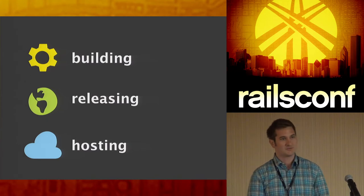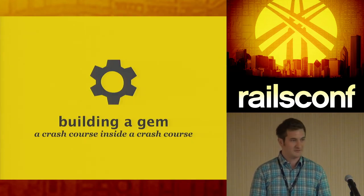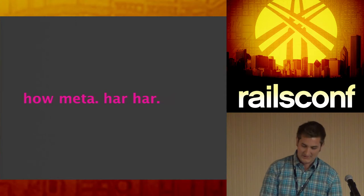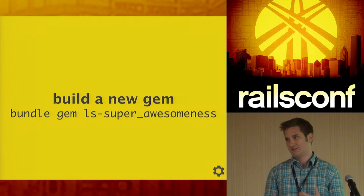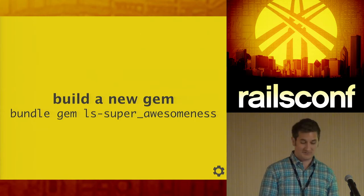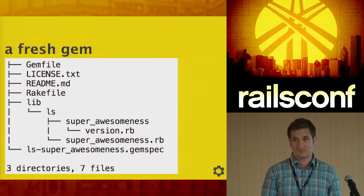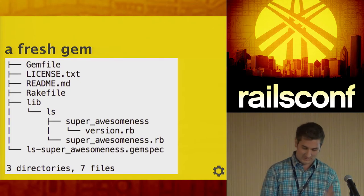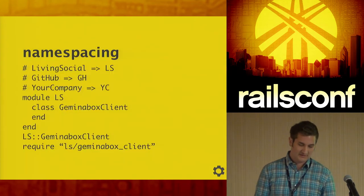Building a gem is easy — you already have Bundler installed, just type `bundle gem your_gem_name`. We use a two-letter company prefix for namespacing, like `ls`, putting all classes under a global module. This helps you know where code came from. The created structure includes a Gemfile, MIT license, README, Rakefile, and a lib directory. The most important file is the gemspec — without that you don't have a gem. Bundler does good defaults for you.